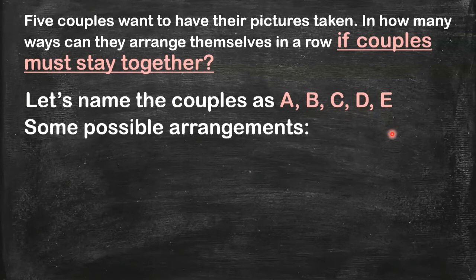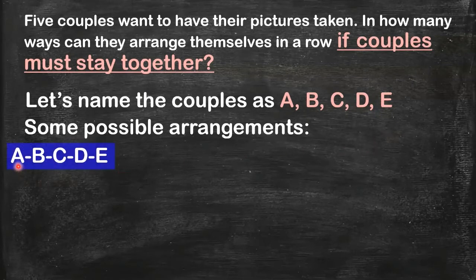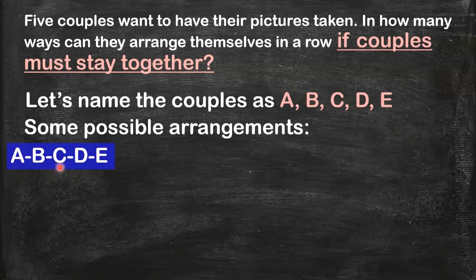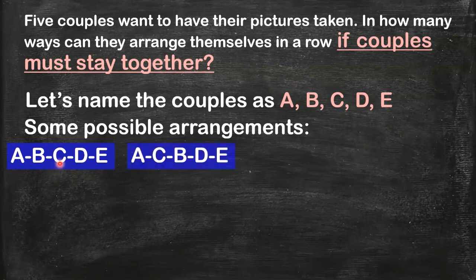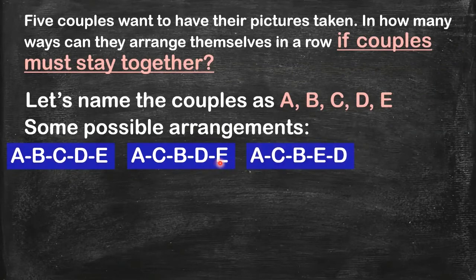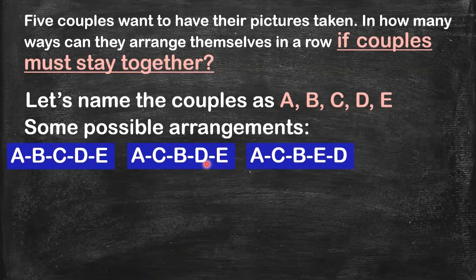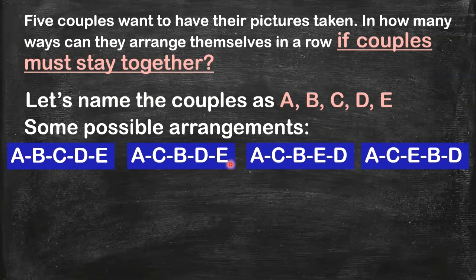Can you give me some possible arrangements? So it could be like this: couple A and then followed by B, then followed by couple C, couple D, and then couple E. Or the arrangement could be like this - couple C and couple D switch positions. Or it could be like this - C, E, and D switched positions. So here are some, actually four, possible arrangements of the five couples. My question is, what is the total number of possible arrangements?